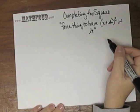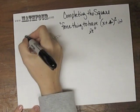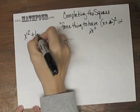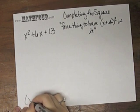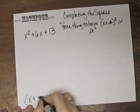That's really what completing the square means. So if you take something like x squared plus 6x plus 13, and you want to force it to have x plus some number,